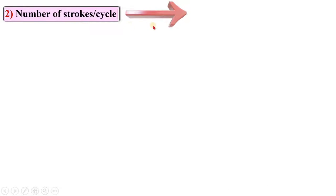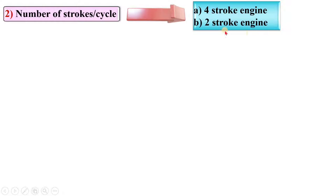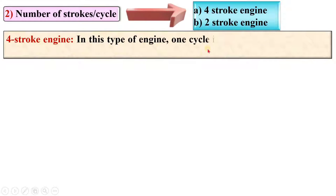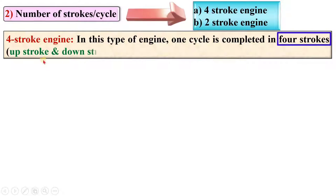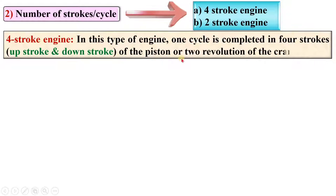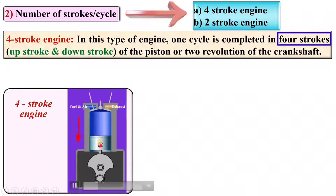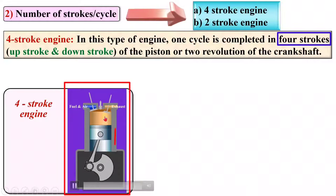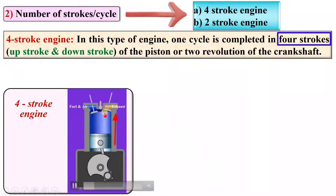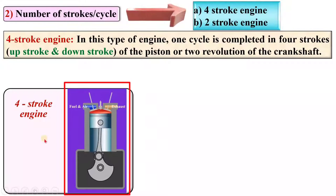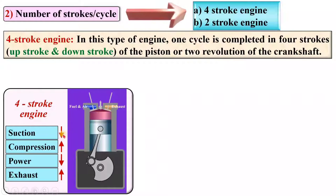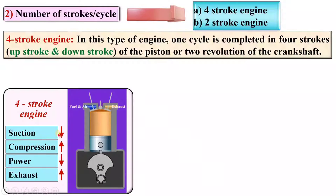According to the number of strokes per cycle, IC engines are classified as four-stroke engines and two-stroke engines. In a four-stroke engine, one cycle is completed in four strokes — that means up-stroke and down-stroke of the piston, or two revolutions of the crankshaft. The four strokes are: suction, compression, expansion (power), and exhaust. Here you can see the direction of piston movement during each corresponding stroke.